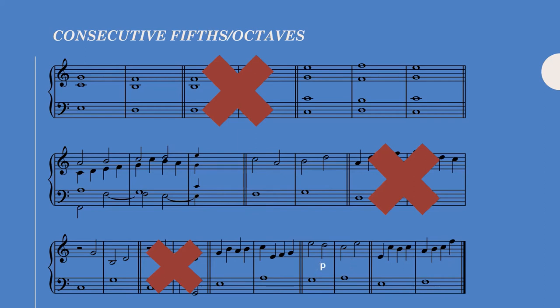Similarly, here we have two fifths occurring in parallel motion with only three intervening quarter notes, but because the first fifth involves a neighboring tone, it's fine. In general, whenever a perfect fifth or octave involves a non-harmonic tone, you're usually in the clear, but you still have to make sure all conditions are met for each specific case.